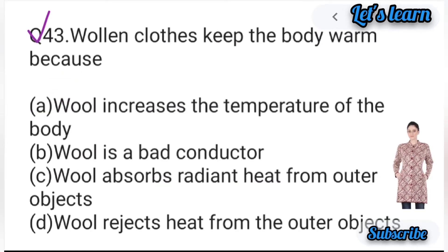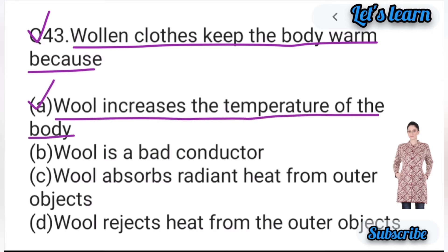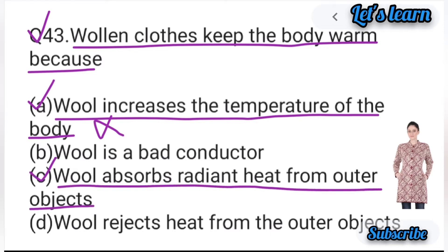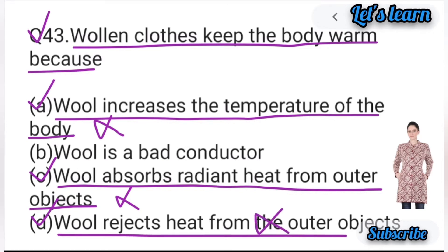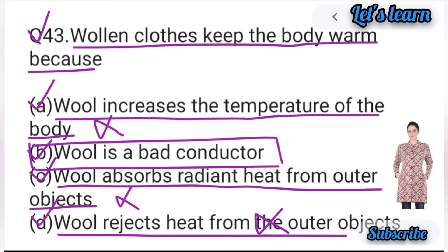Question number 43: Woolen clothes keep the body warm because — woolen clothes body को warm क्यों रखते हैं? Option A: body का temperature increase करता है — नहीं। Option C: outer object से radiant heat absorb करता है — नहीं। Option D: outer object से heat reject करता है — यह भी perfect answer नहीं है। Correct answer है option B: wool एक bad conductor of heat होता है, इसीलिए woolen clothes body को गरम रखते हैं। Option B correct है।